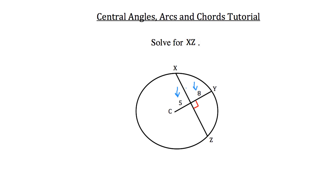And the length from there to point Y on the circle has a length of 8. Now we know that C to Y — this distance here — is a radius of this circle. And we know that any radius of a circle is going to bisect perpendicularly any chord that it intersects. We can see that it's perpendicular because of that right angle here.